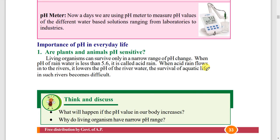You must concentrate on the importance of pH in everyday life. What is acid rain? Very important — acid rain: when the pH of rain water is less than 5.6, it is called acid rain. When river water pH decreases, aquatic life in such rivers becomes difficult.